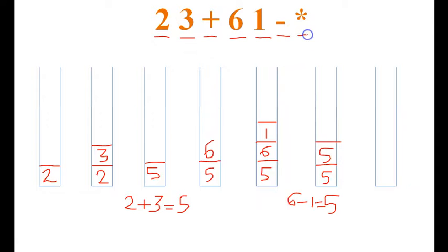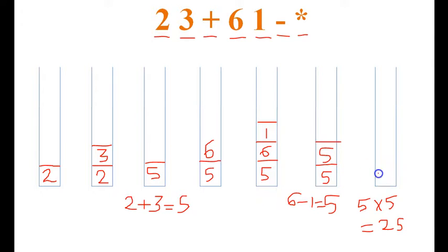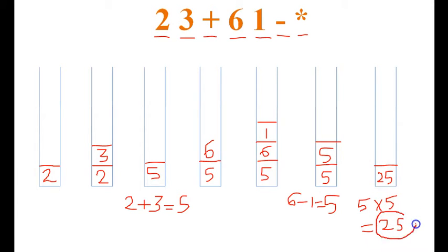The next is multiplication. We perform multiplication on the 2 topmost elements: 5 multiplied by 5 gives us 25. We delete both 5s from the stack and push back the result 25. There are no more operands or operators in the postfix expression, so we have reached the end. Whatever remains on the stack as the topmost element is the result — so 25 is the answer.